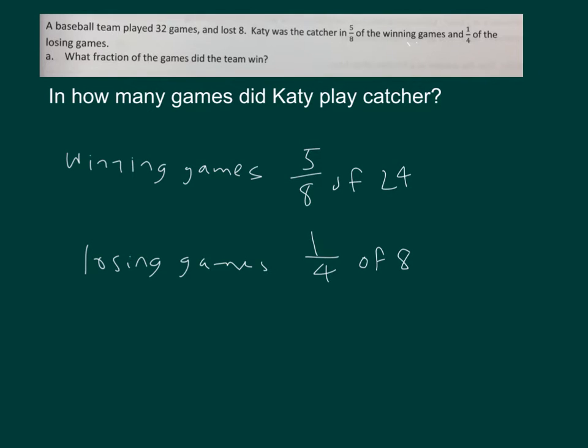5/8 of 24 is equal to 15. 1/4 of 8 is equal to 2. And adding those together, 15 plus 2, you get 17. She played catcher for 17 games. Make sure to write out a nice sentence for that.